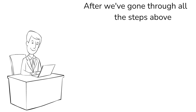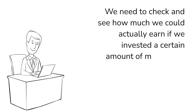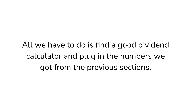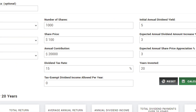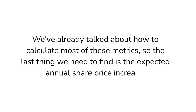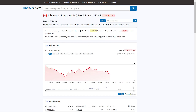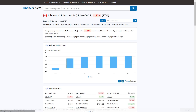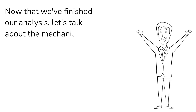After we've gone through all the steps above and determined if a stock meets our thresholds for dividend history, dividend growth, yield, payout ratio, and financial growth, we need to check and see how much we could actually earn if we invested a certain amount of money into the stock. All we have to do is find a good dividend calculator and plug in the numbers we got from the previous sections. The one I normally use is on MarketBeat.com. This calculator lets you plug in the distribution frequency, number of shares, current share price, and many other metrics to calculate your overall return and income over a specific time period. To find the expected annual share price increase, head over to FinanceCharts.com, type in the ticker symbol, click on the Performance tab, then Price CAGR. For J&J, our 5-year compound annual growth rate is 5.76%.